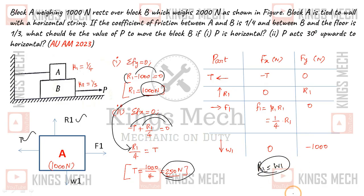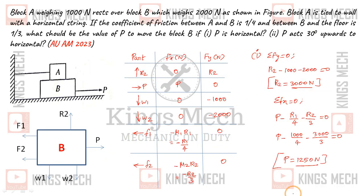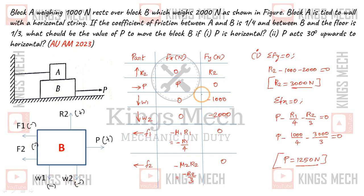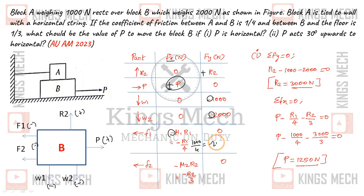Now moving to block B. Forces on B: R2 on positive y-axis, P on positive x-axis, F1 and F2 both on negative x-axis, W1 and W2 both on negative y-axis, R2 on positive y-axis. F1 equals minus mu1 times R1, which is minus R1/4. Since R1 = 1000, F1 = minus 250. F2 equals minus mu2 times R2, where mu2 (between B and floor) = 1/3, so F2 = minus R2/3.